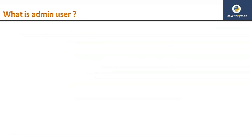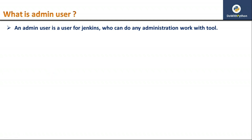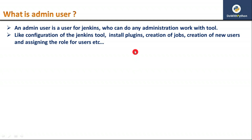Generally, for any tool or operating system you have some admin users. An admin user for Jenkins is a user who can do any administration work with the Jenkins tool. Administration work means configuration of Jenkins, installing plugins, creation of jobs, creation of users, and assigning roles for users — all those things you can do if you are an admin user for that tool.